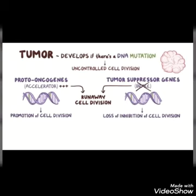This melanin acts as a sunscreen because it scatters and disperses the sun rays. If these sun rays remain unchecked, they can cause DNA mutation.